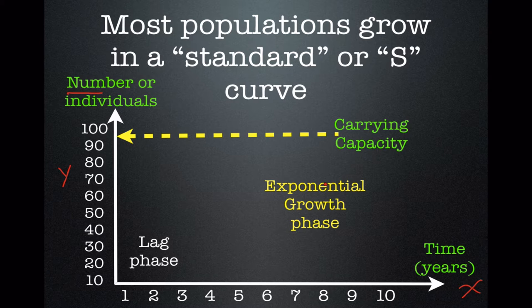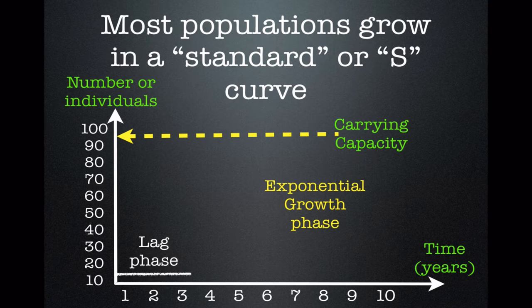In nature, most populations produce a curve that kind of takes an S shape. The first part of the standard S curve or growth curve for a population is called the lag phase. This is when the population is really not growing or declining — it may be increasing slightly, but it's not really changing dramatically.